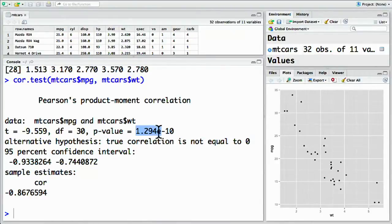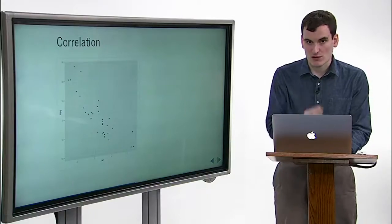Most notable is the p-value, seen here. This value reads as 1.294 times 10 to the power of negative 10. That's smaller than 1 out of a billion. This is the probability that the data would appear to be this strongly correlated by chance alone. The smaller the p-value, the more significant the correlation.